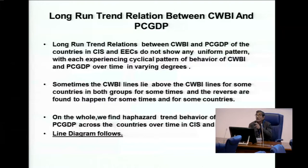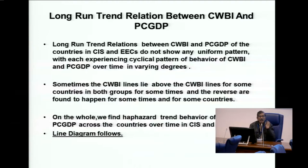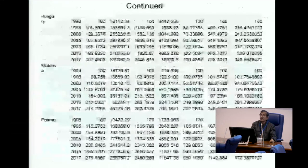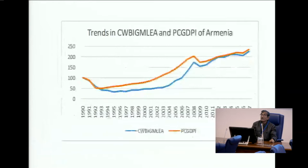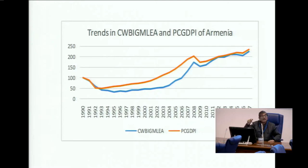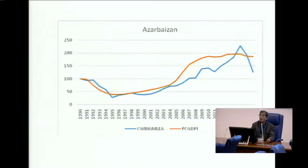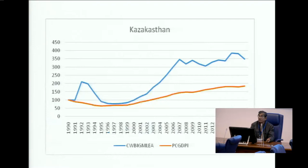I have also tried to examine the long-run relationship between the per capita GDP index and the composite well-being indexes. I do not find any uniform relationship between the two. The diagrams show that sometimes the composite well-being lies below the per capita GDP line and sometimes it lies above — this happens in almost all countries in both CIS and East European groups.